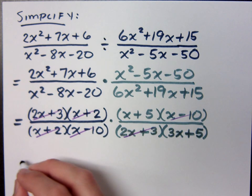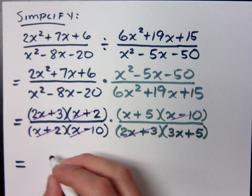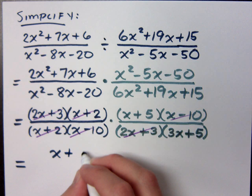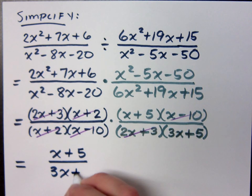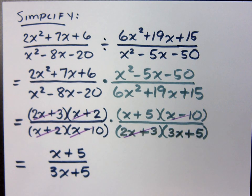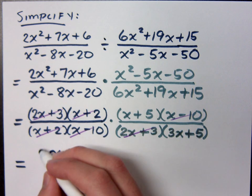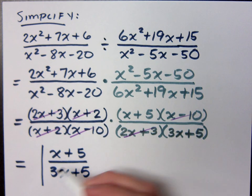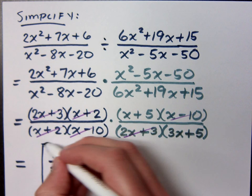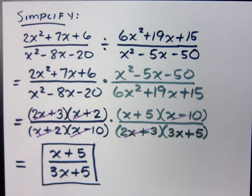So we are done. What is my final answer here? x plus 5 over 3x plus 5. That looks totally awesome. Can I reduce the 5s? They're not common factors. They may be common terms, but that's not what we cancel or reduce in these guys. What do you think? Good?